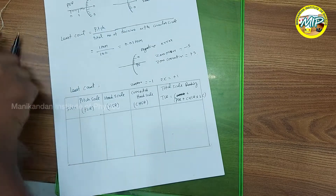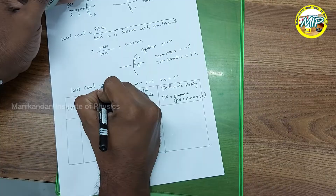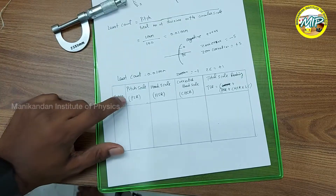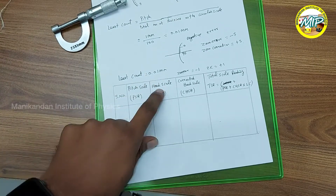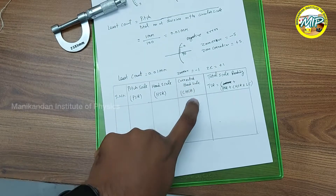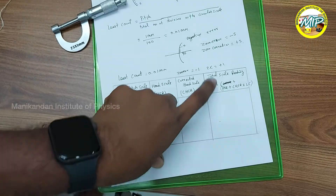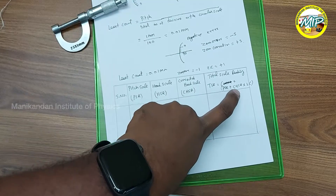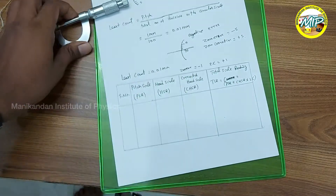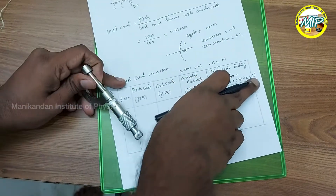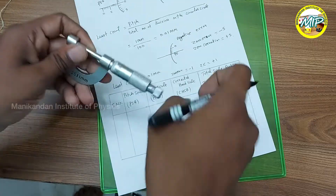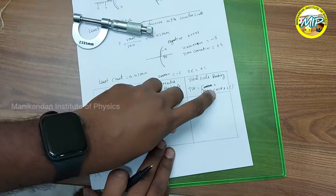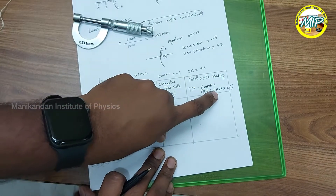Now I am going to explain the table. We write pitch scale reading, head scale reading, and corrected head scale reading as columns, and then the total scale reading. The total scale reading equals pitch scale reading plus corrected head scale reading multiplied by least count. We apply correction to the circular scale reading because the error is on the circular scale, not on the main scale.